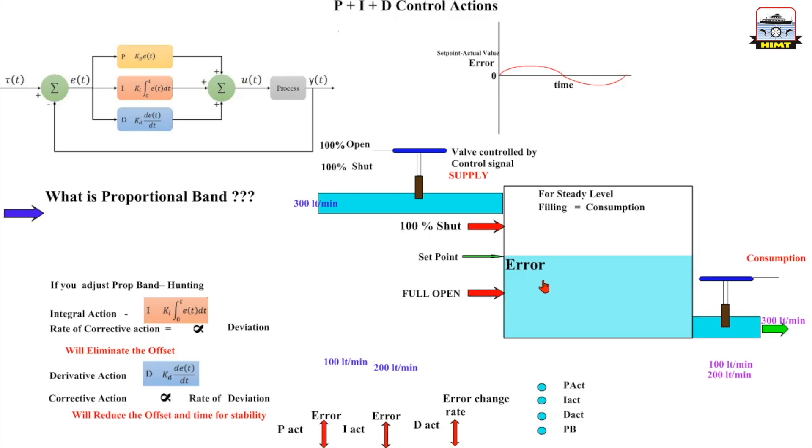So we can also think it like this. Let us go back to this particular example. Now I am going back to 200 liters and somebody has opened 300 liters. The control system is seeing that the level has started falling.